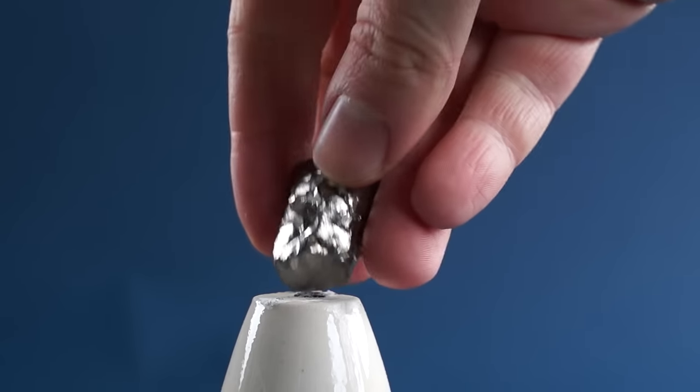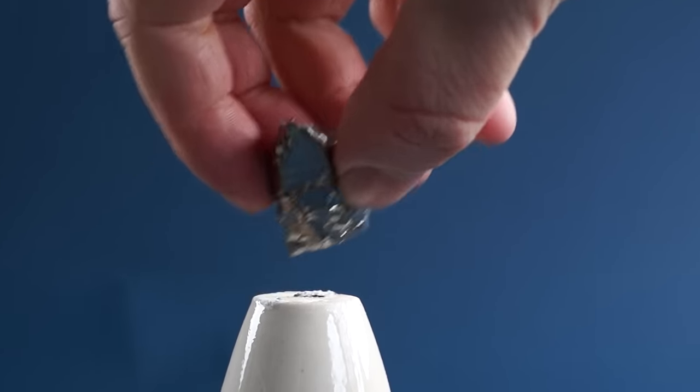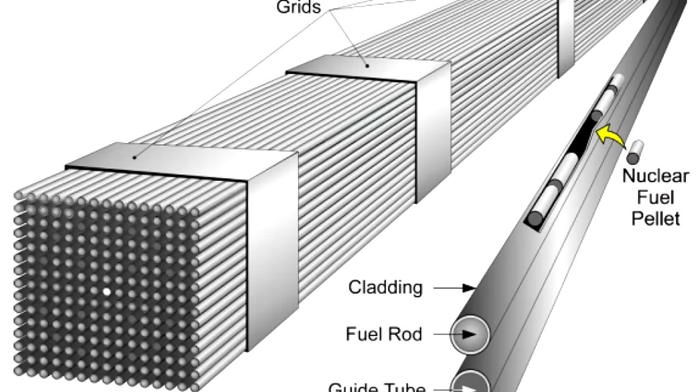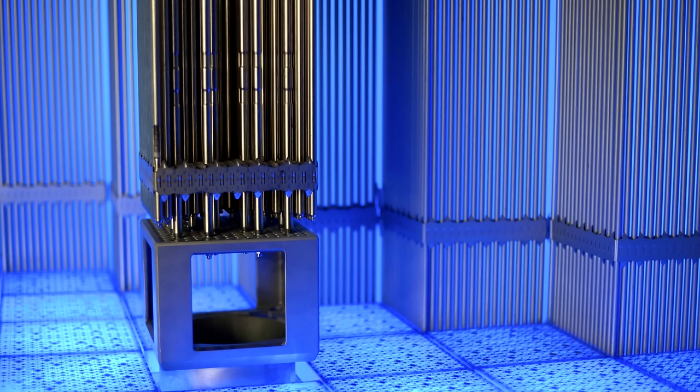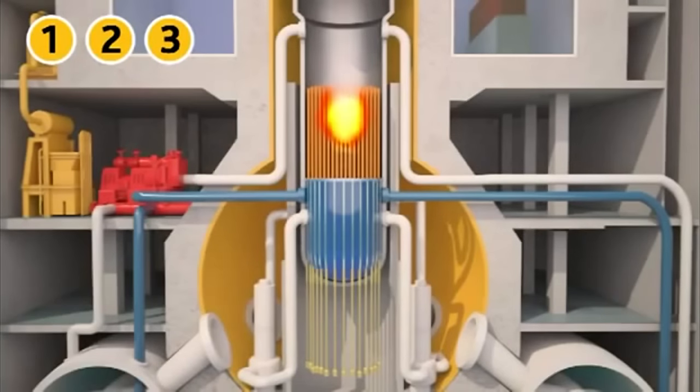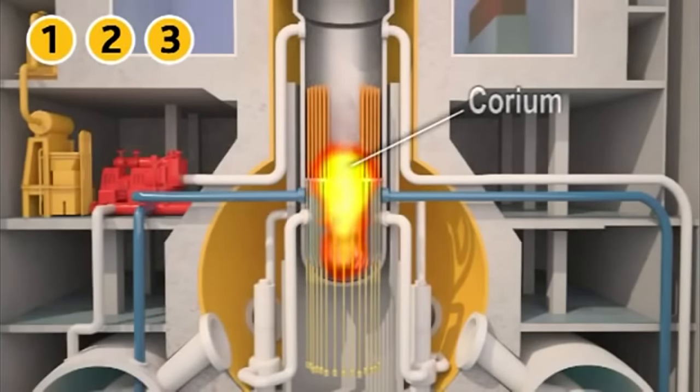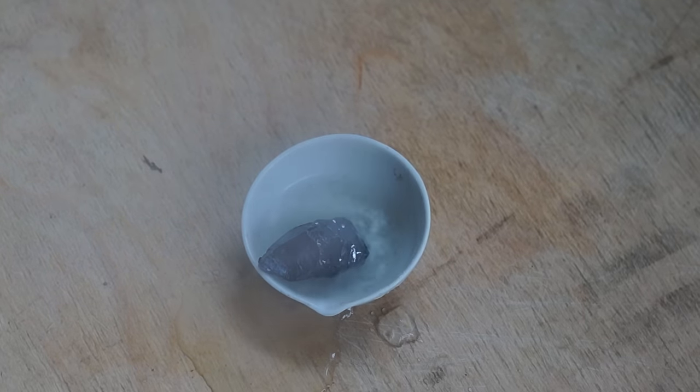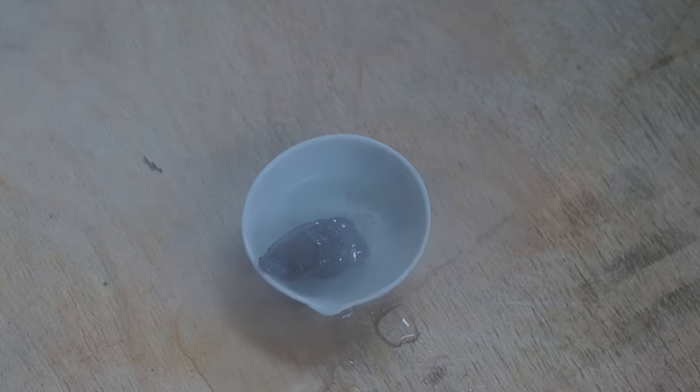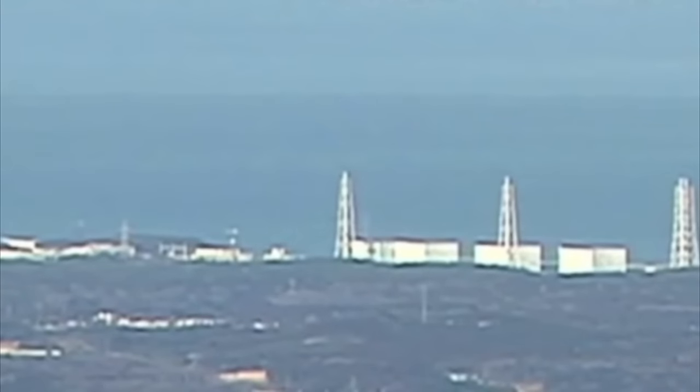However, zirconium also has disadvantages. Due to its inability to absorb slow neutrons and its high melting temperature, zirconium is used for the construction of nuclear reactors. In an emergency situation when the reactor overheating, zirconium may begin to react with water in the reactor releasing explosive hydrogen, which is exactly what happened at Fukushima in 2011. The released hydrogen caused the explosion of the building with the reactor.